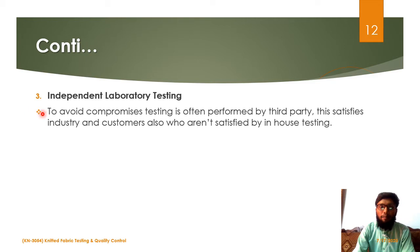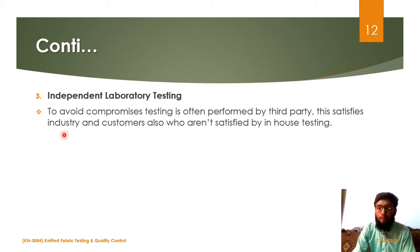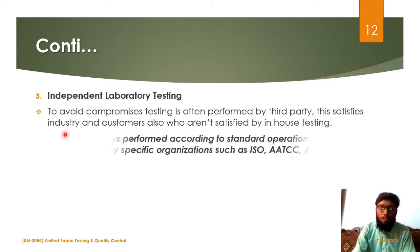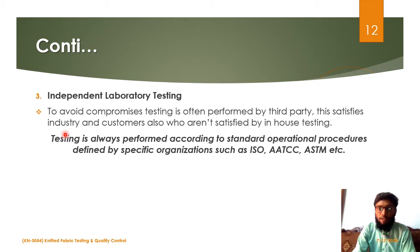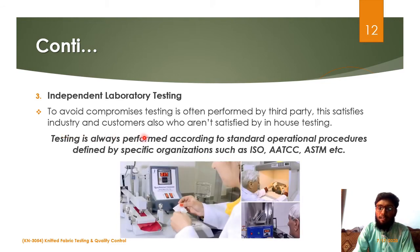The third type is independent laboratory testing, also called third-party testing. In this, a third-party laboratory performs the testing, and this is for the satisfaction of both the industry, supplier, and customer. Textile testing is always performed by the standard operational procedure and instruments designed by specific international organizations such as ISO and ASTM.